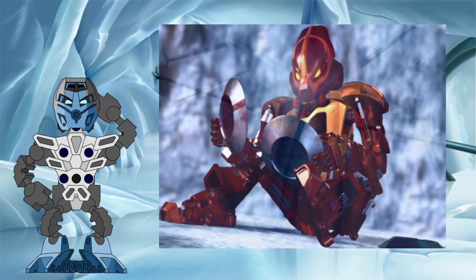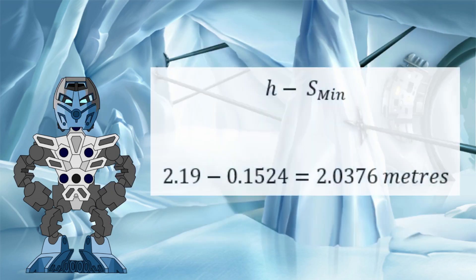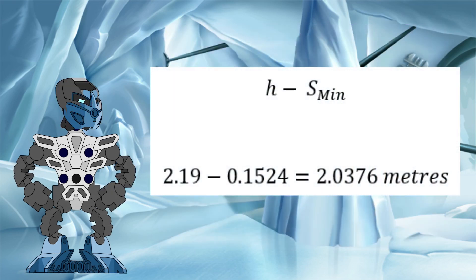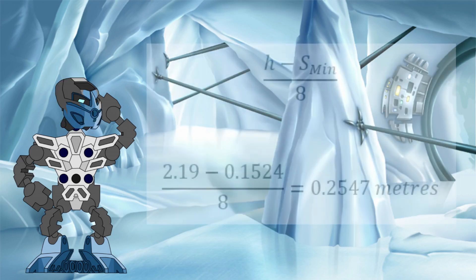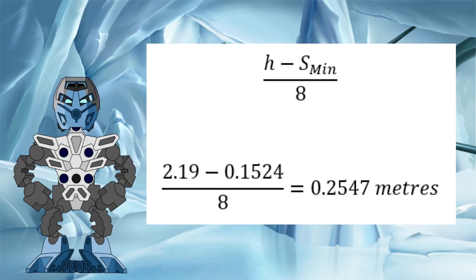In order to better visualize what's going on, we will use a Toa as an example. If we take their standard height of 2.19 meters as our h value, and remove from it the 15.24 centimeters established as our universal s minimum value, that will give us 2.0376 meters. Then, dividing that by eight, we will get our reduction factor of 0.2547 meters, or 25.47 centimeters. This means that for a Toa hit by a shrink disc, they will shrink 25.47 centimeters for every power level of the disc.